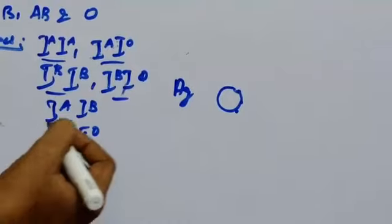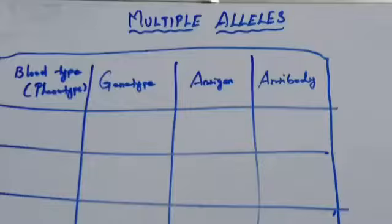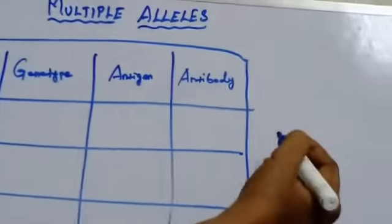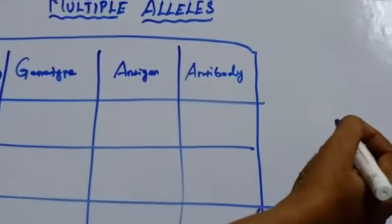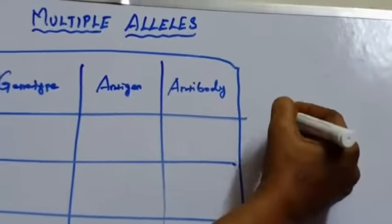In human population, three different alleles for ABO blood group system are found. What are the three different alleles?